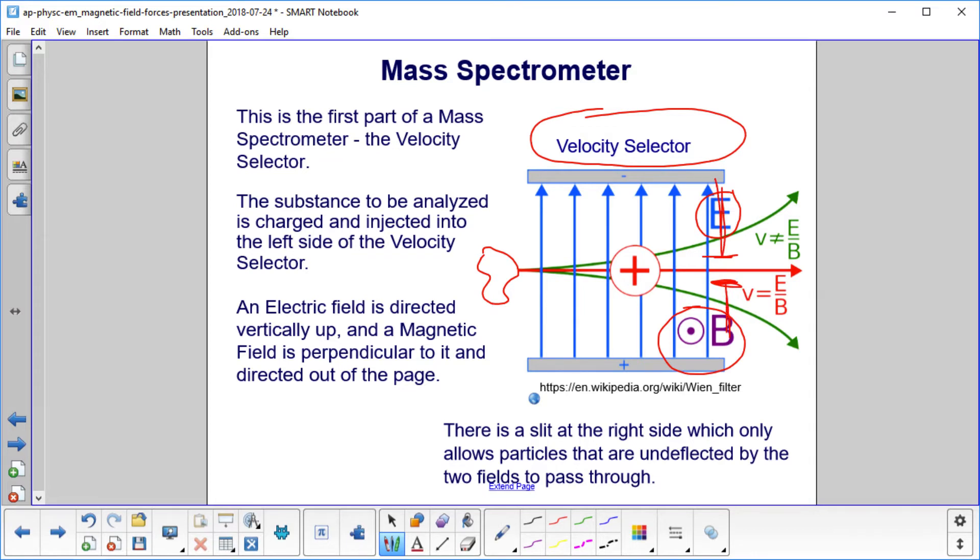And it only allows particles that are undeflected by the two fields to pass through. If you have a particle going like this, it gets stopped by this wall. We only take the ones that go through without being deflected.